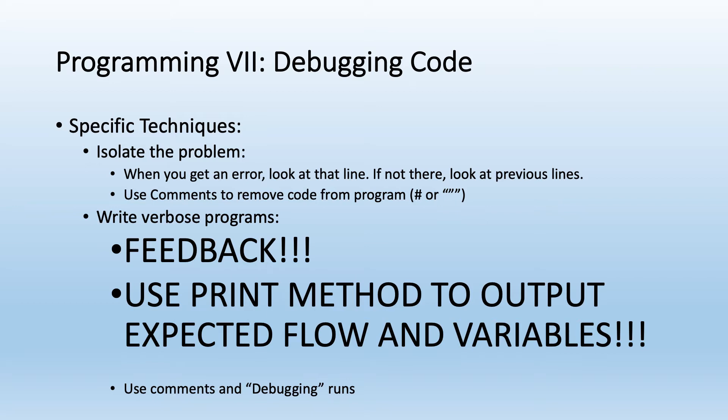A really important technique is writing verbose programs. When writing code the first time through, get lots of feedback using the print method a lot. Output the values of variables — this will tell you whether you're going into an if statement or a for loop, whether values are changing every iteration, or whether you've misspelled a variable name. If you don't use print to output values, you have no idea if what you think is happening is actually happening.